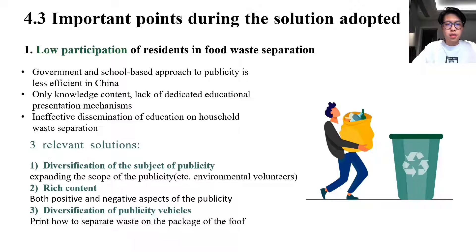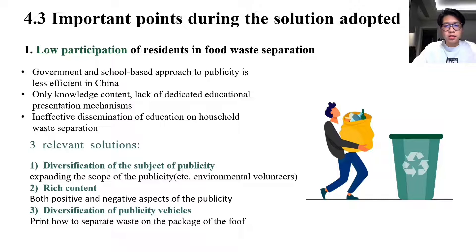There may be some problems during implementation. The first is low participation of residents: publicity and education are important, but in China the government and school-based approach is less efficient. Environmental protection is not a compulsory subject in most schools, and students are given only handbooks — they receive content but lack dedicated educational mechanisms, leading to inefficient publicity. Three ways to improve this: diversification of publicity subjects (expanding scope to include environmental volunteers), enriching content with both positive and negative aspects so residents understand correct measures, and diversifying publicity vehicles — for example, printing information on food packaging about how to sort waste.